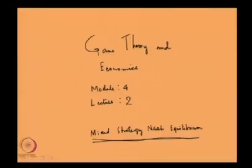Welcome to the second lecture of module 4 of this course called Game Theory and Economics. We have been discussing mixed strategy Nash equilibrium. I have been trying to motivate the problem — here is a case where the players can randomize between their actions. It is possible that they do not take their actions with certainty; they may take certain action with some probability and some other action with some probability.